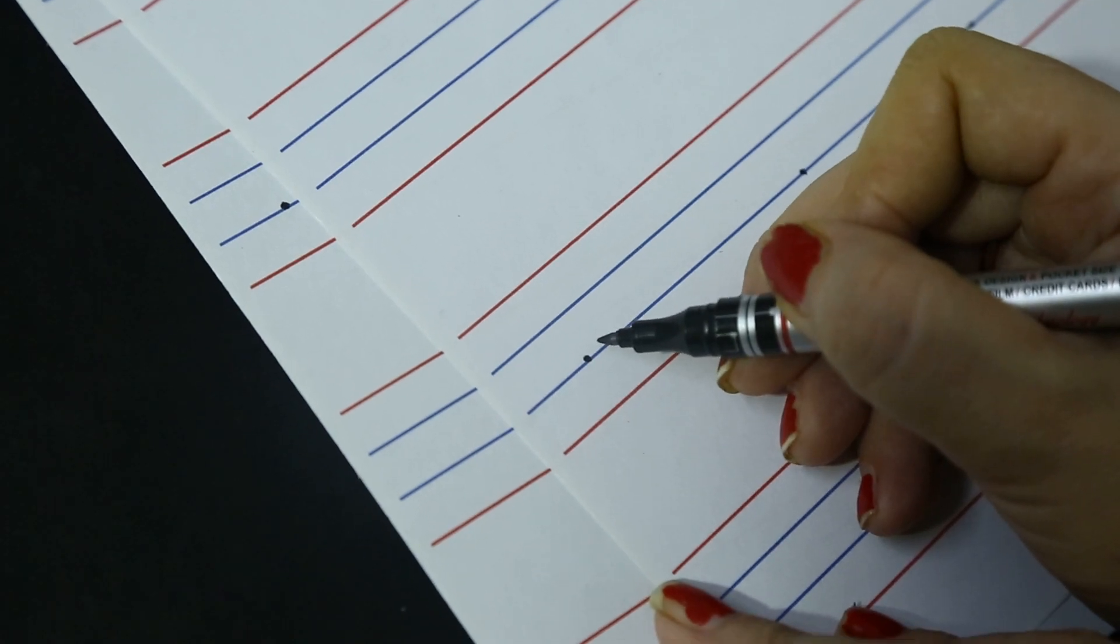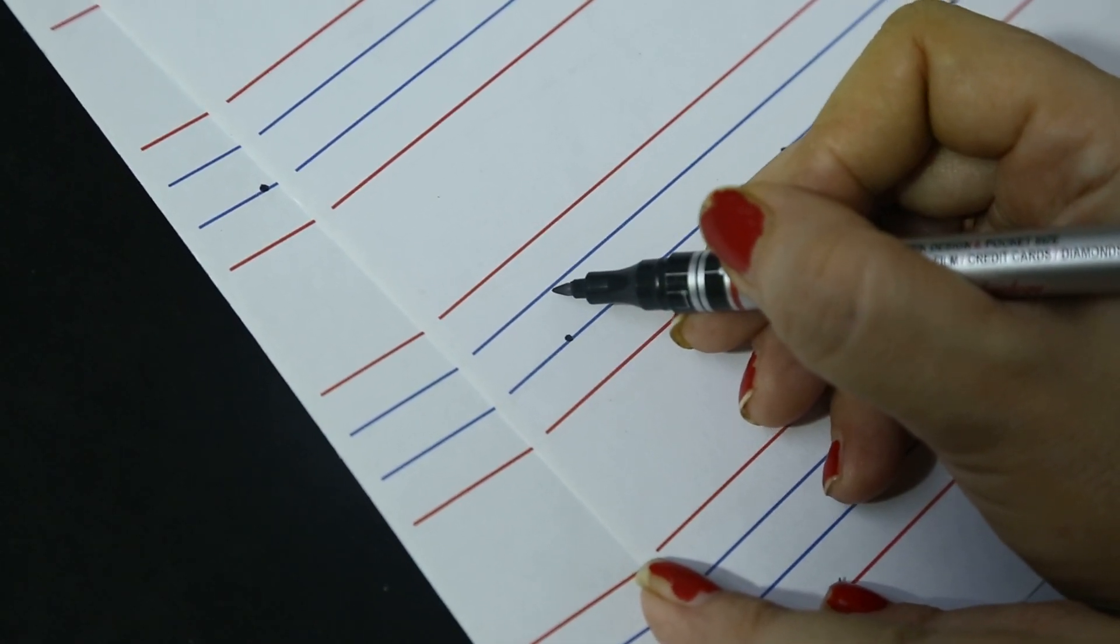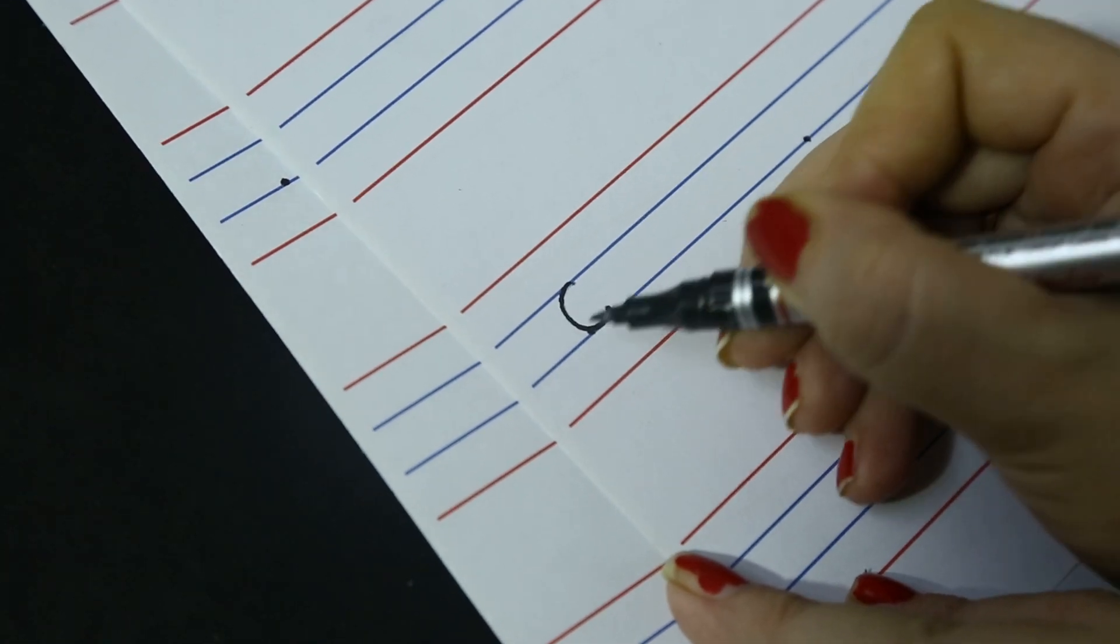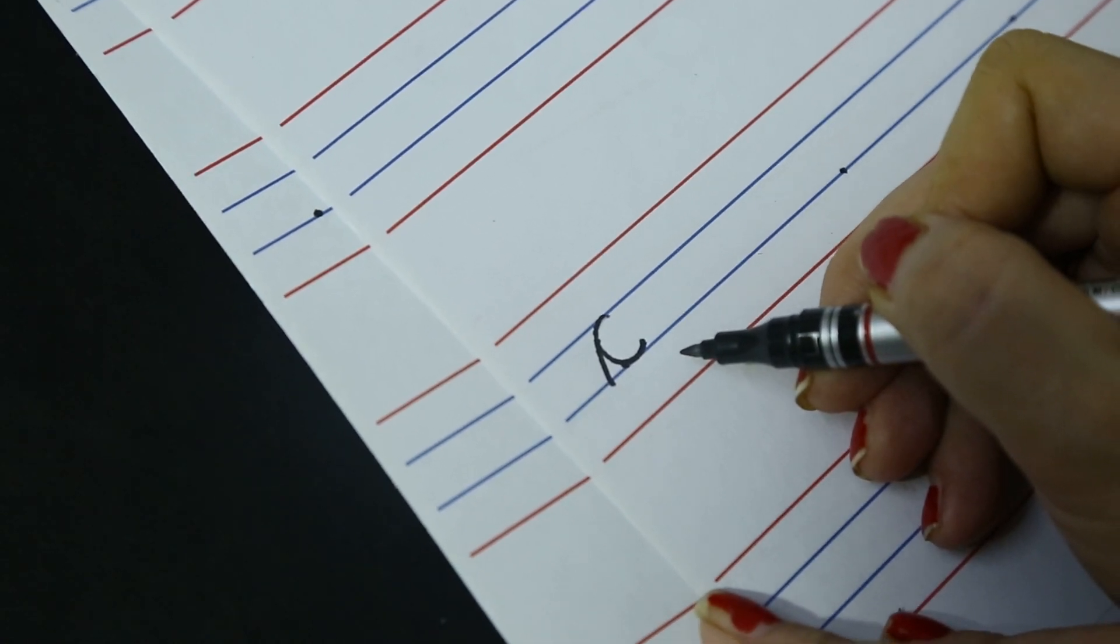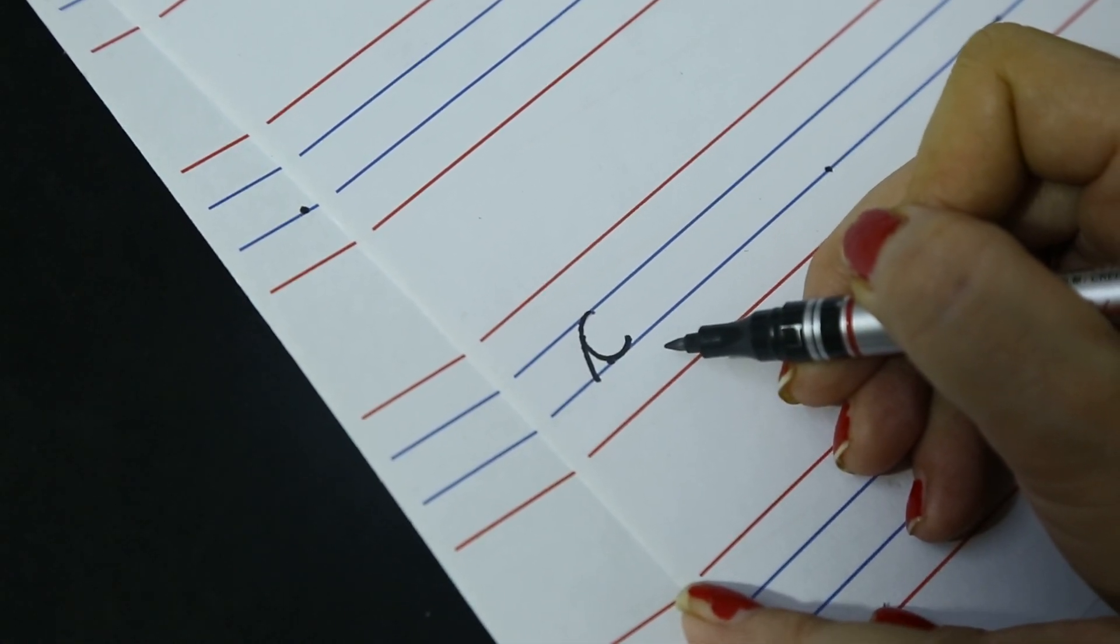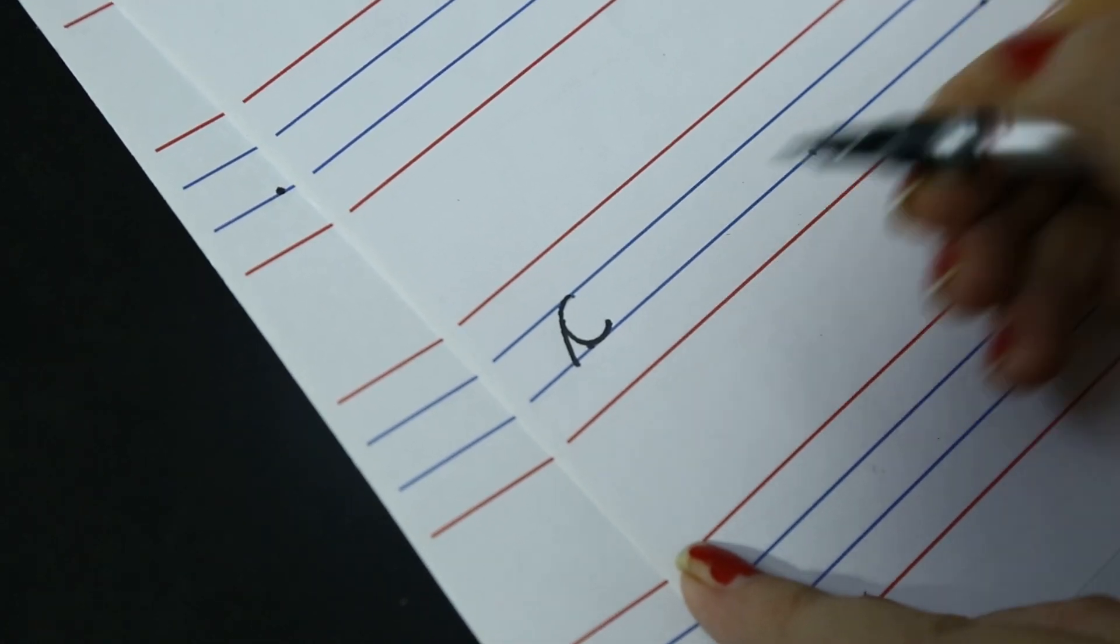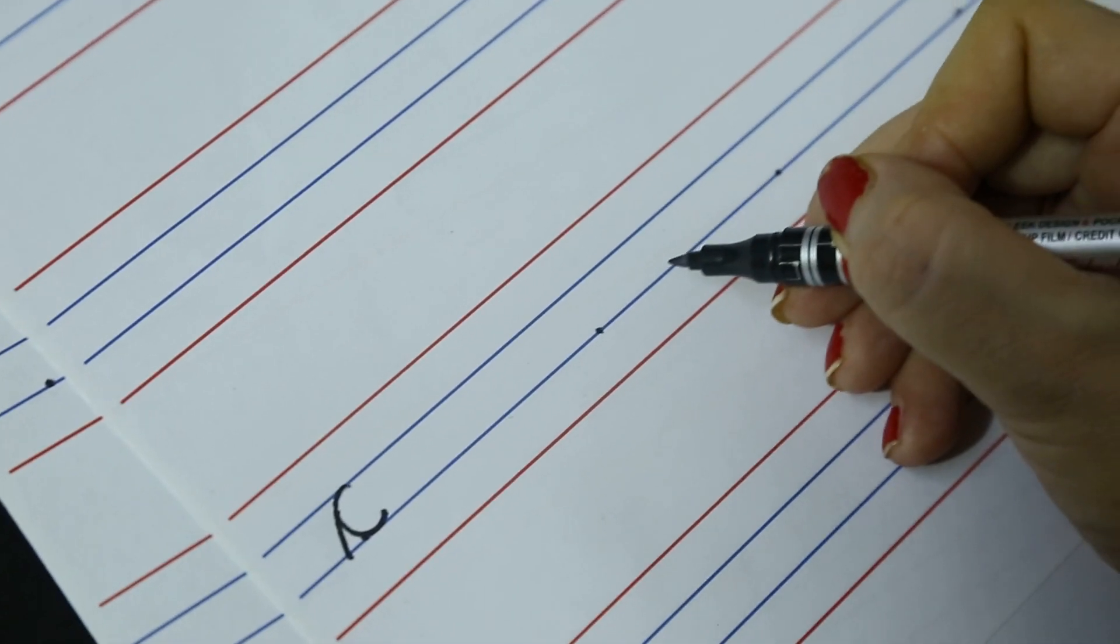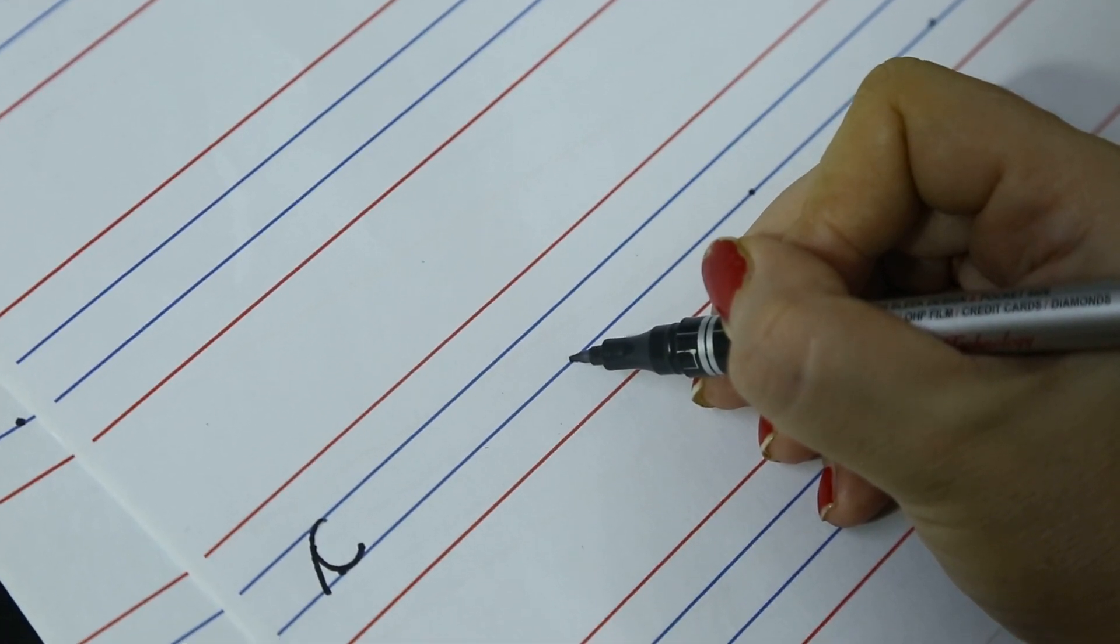Some of my students will make cursive letter C like this. This is totally, completely wrong. We have not to follow this pattern. And some of my kids, they will make cursive letter C like this.